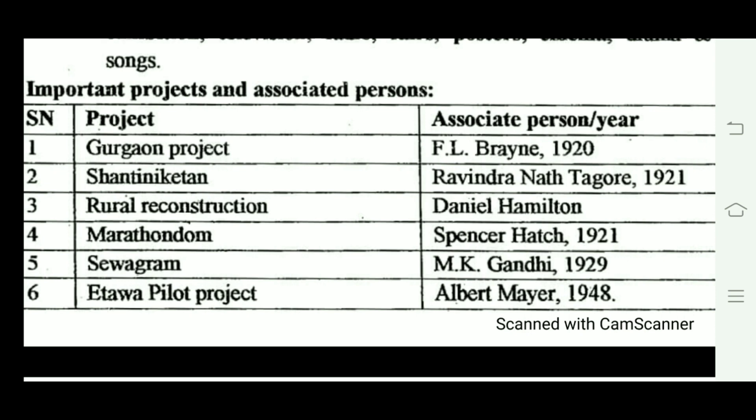The Marthandam Project was led by Spencer Hatch and initiated in 1921. The Sevagram Project was initiated by Mahatma M.K. Gandhi in 1929, first initiated in 1921 and extended in 1936. These are the pre-independence projects.